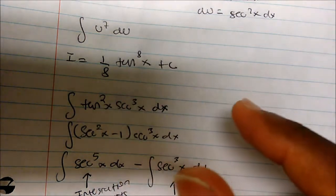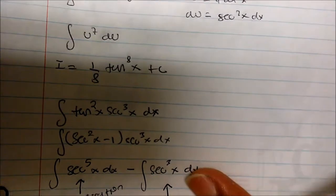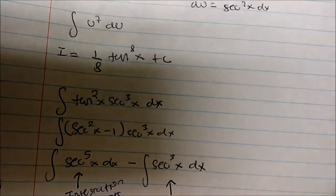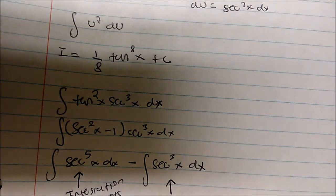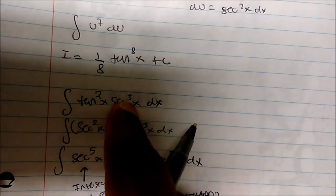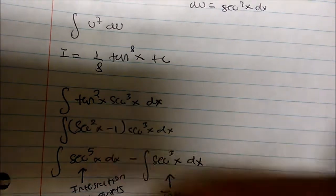where tangent is even and secant is odd. Well, now we got to be thinking about getting everything in terms of tangent or getting everything in terms of secant. And notice that we couldn't have go the other way. Notice we couldn't have used secant squared. We couldn't have used the identity of a secant because we have three secants here.